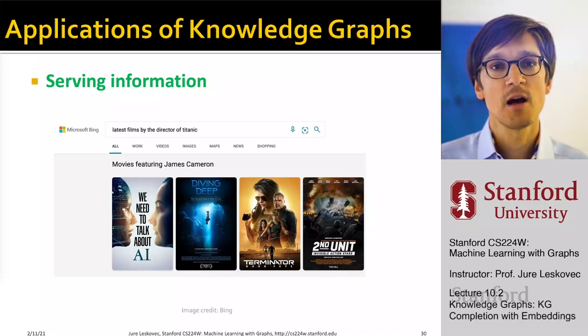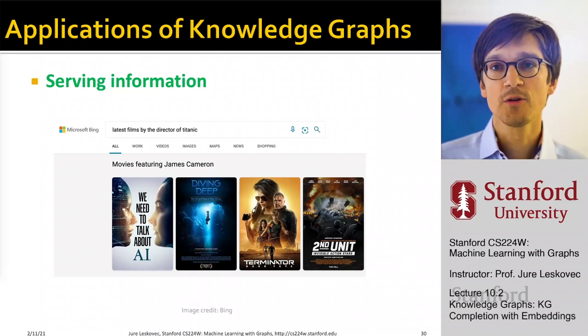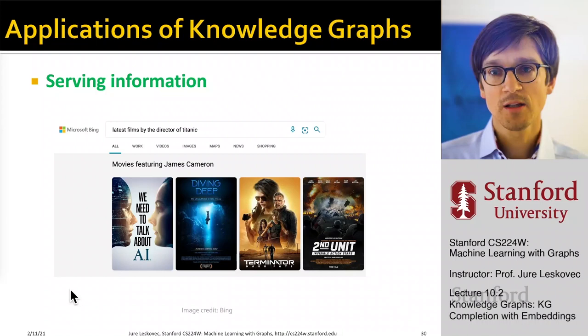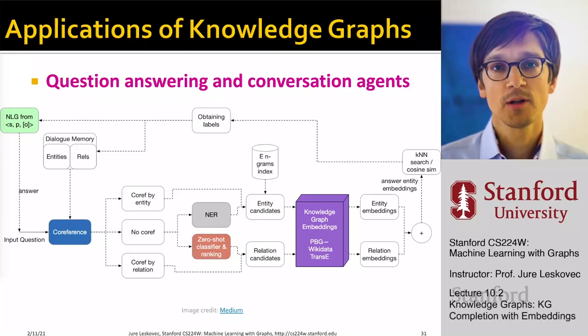One way to use knowledge graphs is to serve information. For example, if you go to Bing search engine and ask for the latest movies by the director of Titanic, this is a knowledge graph query — you find Titanic, identify who directed it, find that person, and surface which other movies they directed. Without this data encoded in a graphical form, answering this type of question would be practically impossible.